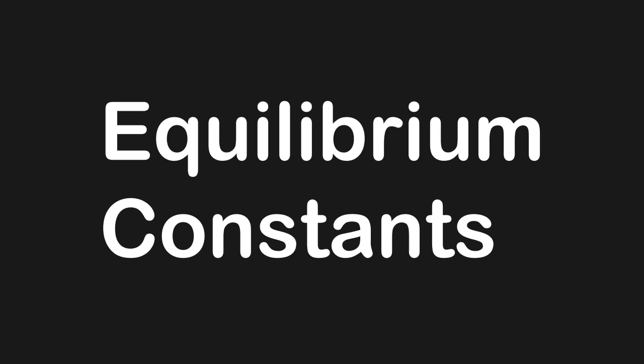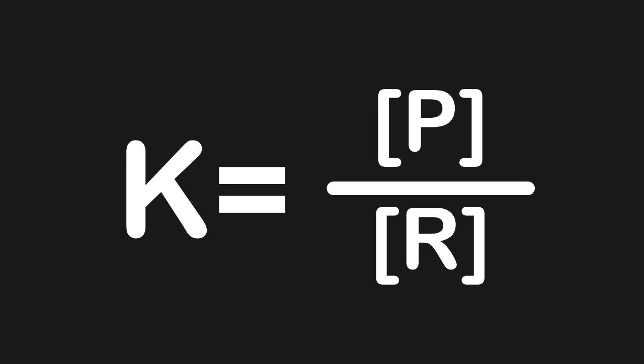In this short video, we'll describe what you need to know about equilibrium constants for the MCAT. Equilibrium occurs when the concentration of products and reactants are no longer changing. We can quantify this with an equilibrium constant, which tells us the ratio of products over reactants at equilibrium. It doesn't matter what type of equilibrium we're describing — it's always going to be equal to products over reactants.